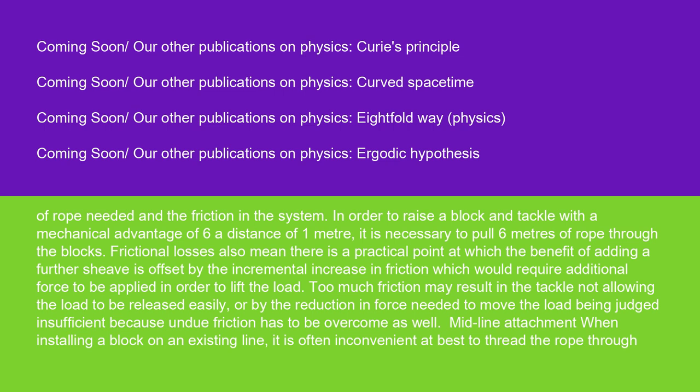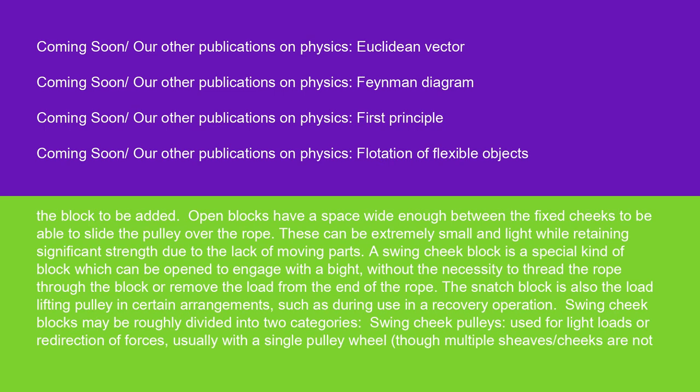Midline attachment: When installing a block on an existing line, it is often inconvenient at best to thread the rope through the block to be added. Open blocks have a space wide enough between the fixed cheeks to be able to slide the pulley over the rope. These can be extremely small and light while retaining significant strength due to the lack of moving parts. A swing cheek block is a special kind of block which can be opened to engage with a bite without the necessity to thread the rope through the block or remove the load from the end of the rope. The snatch block is also the load lifting pulley in certain arrangements, such as during use in a recovery operation.